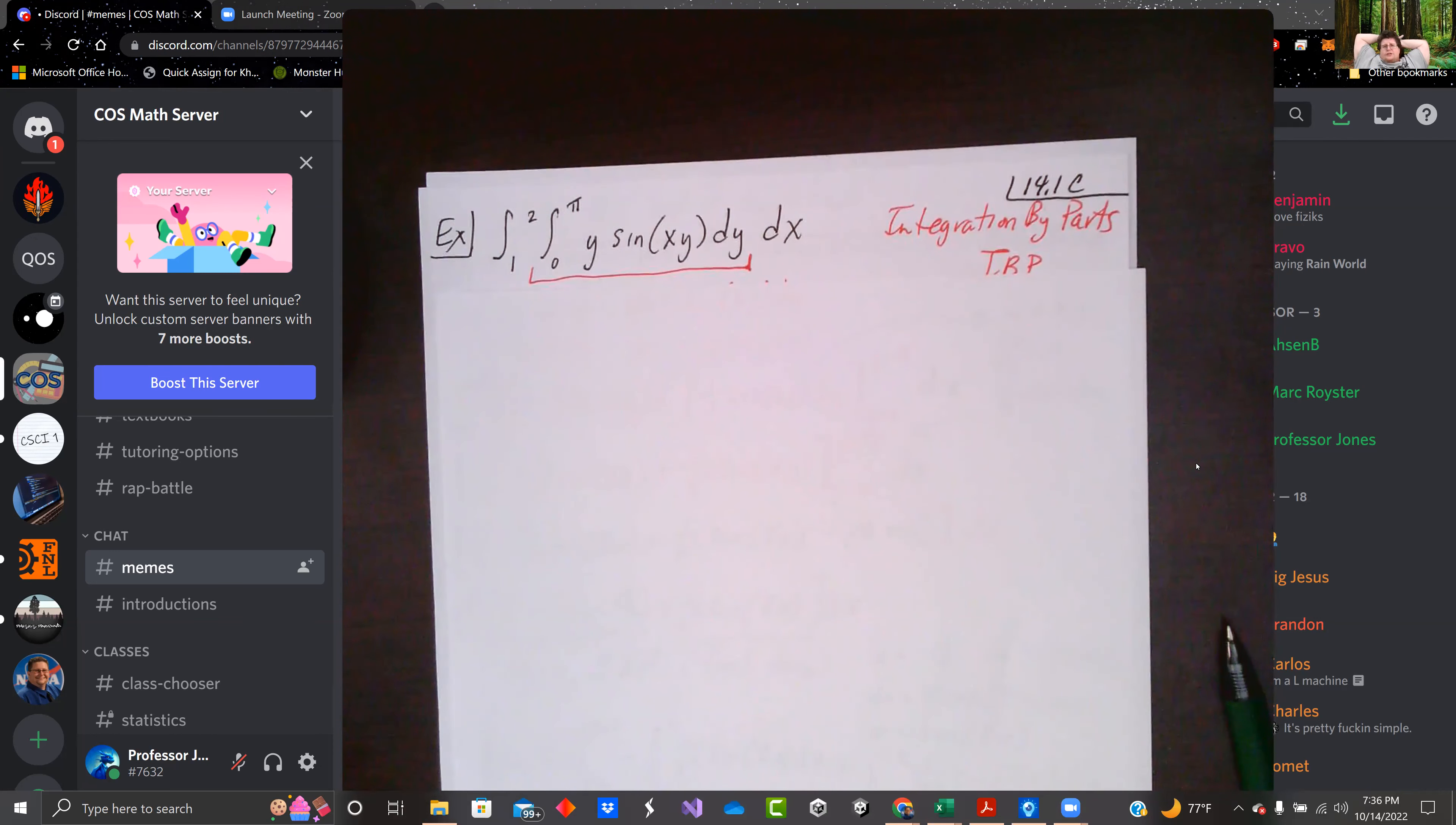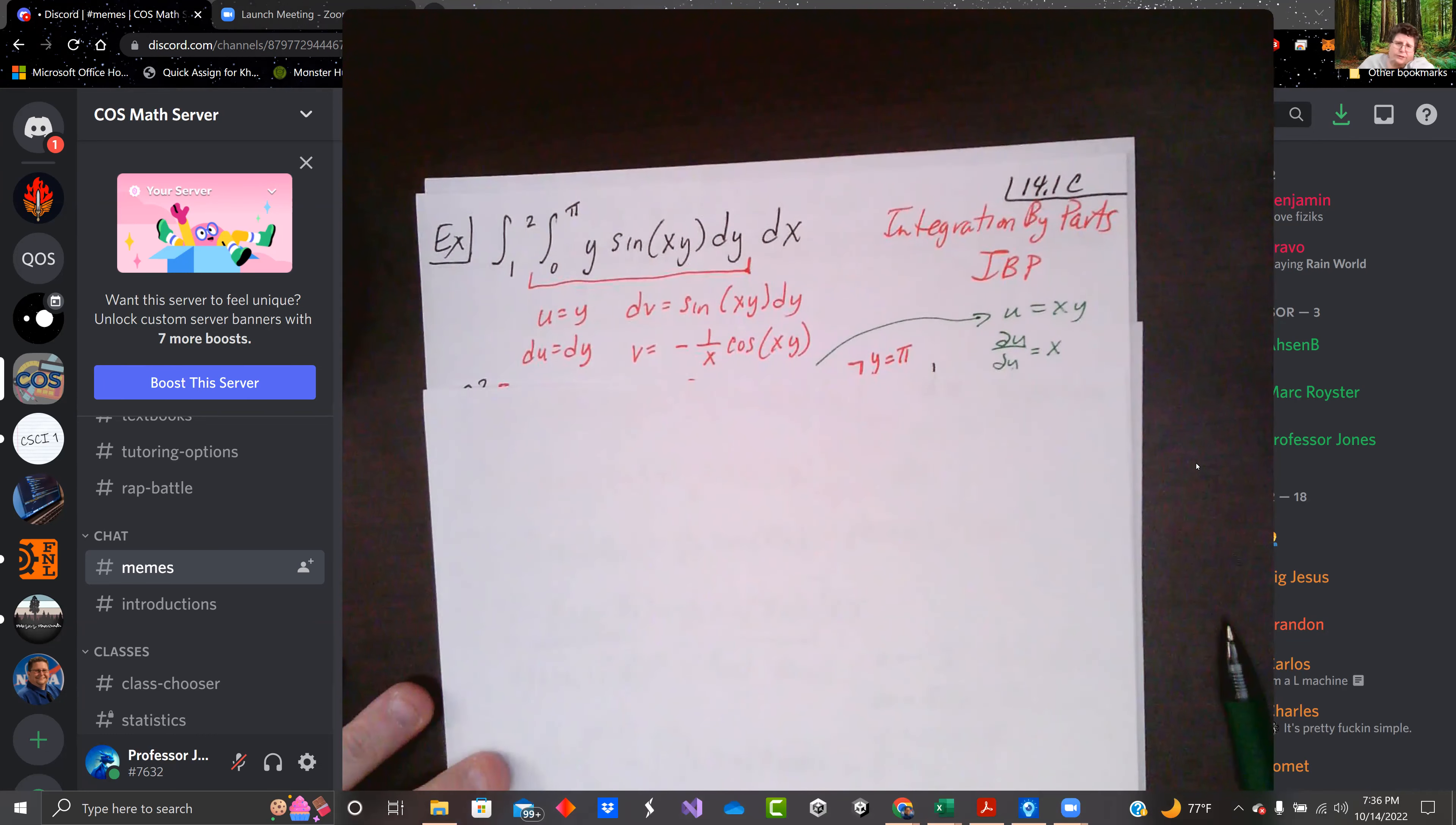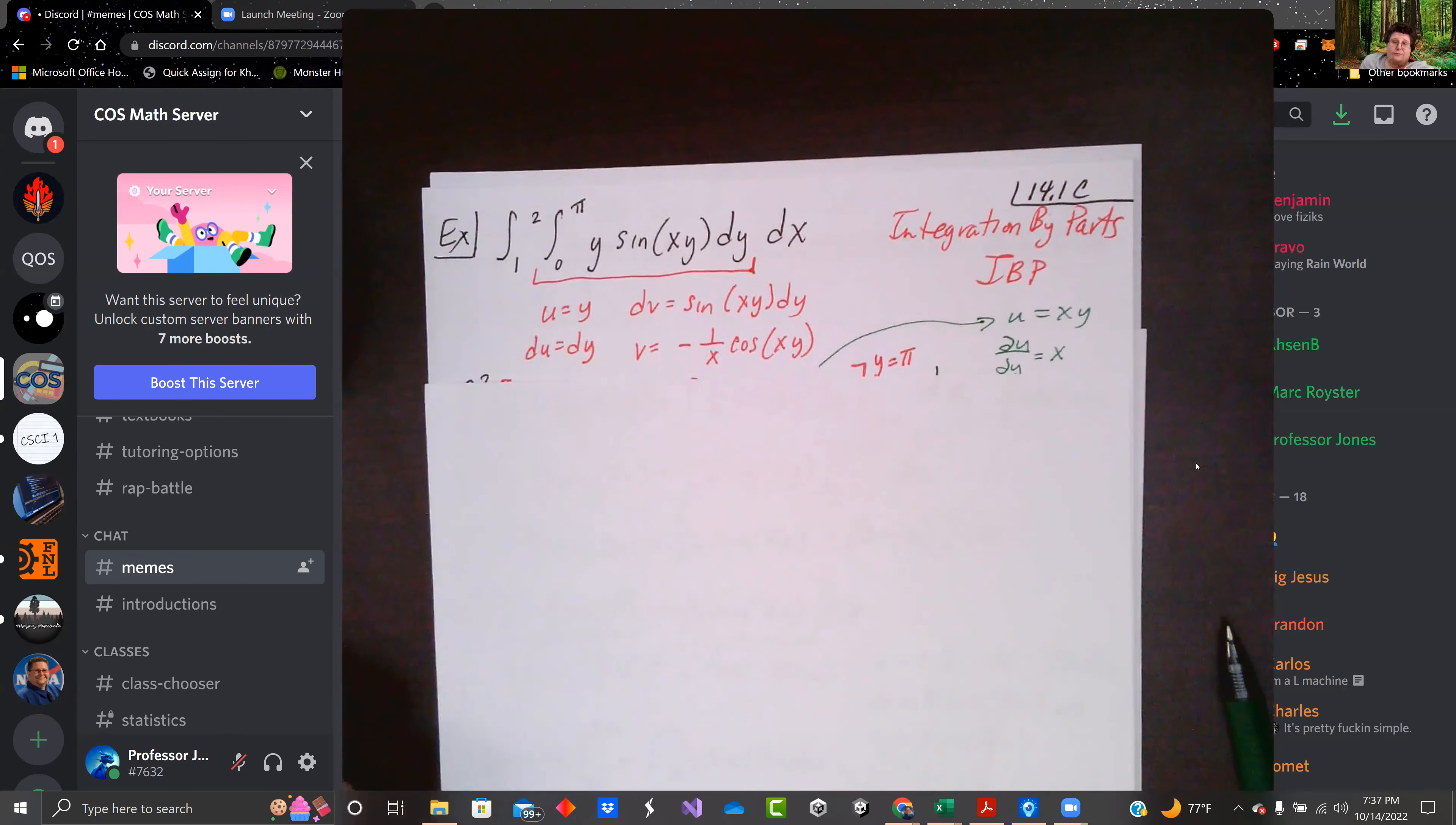We're doing integration, integrating along dy first. This needs to be done by parts. So I did u equals y, du equals dy, dv equals sine of xy dy, and then v equals negative one over x cosine of xy.